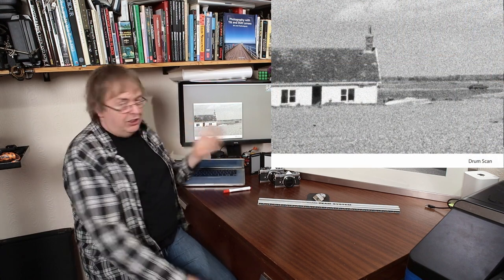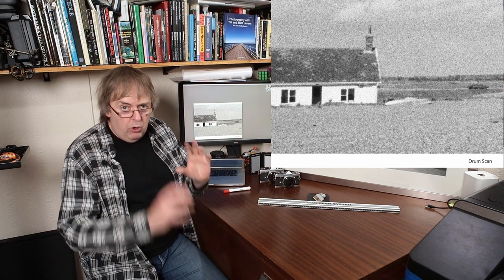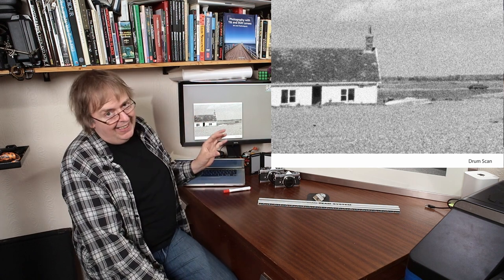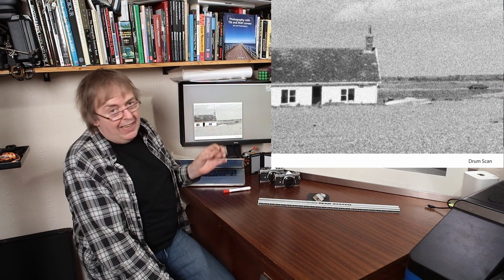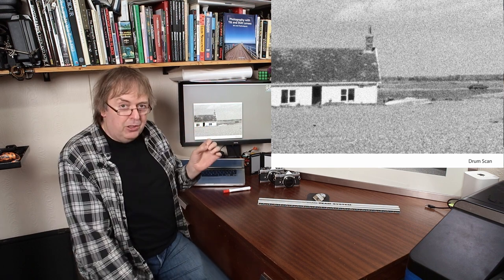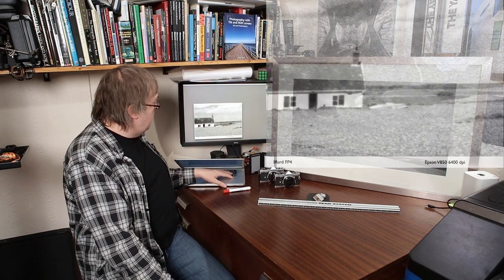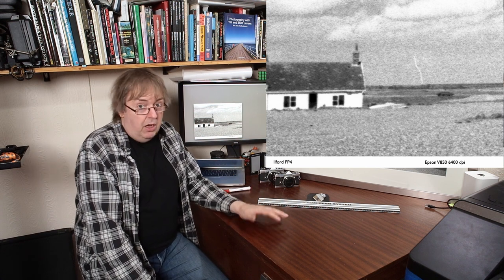The drum scan, which is supposed to be the Rolls-Royce of scanning — oil mounted and everything — the detail in that is incredible in terms of picking up the grain. Is it the best-looking scan? Maybe, maybe not. The V850 shows quite an obvious difference, and the V850 and V750 do need care in getting the focus right. Even on the FS4000 I used to check this, because film has a habit of popping and moving when it's in mounts unless it's securely mounted. So you do have to be careful when you're scanning.